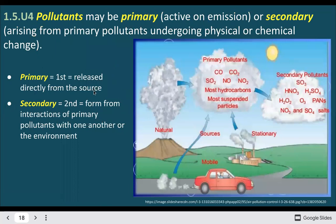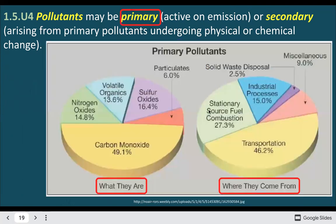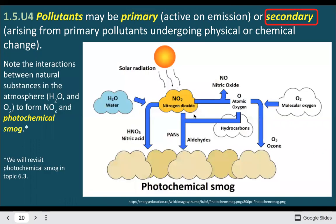Pollutants can be primary — released directly from the source and immediately impactful on emission — or they could be secondary, where they undergo some kind of physical or chemical reaction. Here's a list of secondary pollutants; you do not need to memorize it, but you might recognize some nitrogen compounds, sulfur compounds, and ozone. Here's a breakdown of primary pollutants and where they tend to come from, and then we can see secondary pollutants as well.